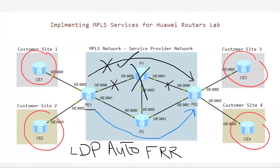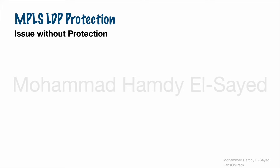LDP Auto FRR can enhance network availability and reliability so that services traffic can be quickly switched over from the main to the backup LDP LSP path if the main LDP LSP path is facing failures.